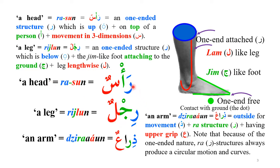In 'rasun,' the ra shows a one-ended structure; the alif with hamza shows the top part of the body; and the sin has three-dimensional movement — three teeth indicating three-dimensional motion. The sin is also associated with power, so 'rais' means the head of an organization.